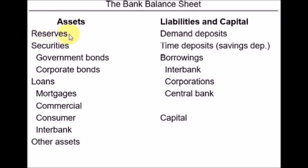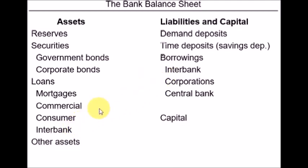On the left-hand side we have assets, showing how the funds have been used. Part of the funds can be used as reserves — the cash the bank holds. Part can be used to buy different kinds of marketable securities, such as government bonds, treasury bills, or corporate bonds. Another part might be used to make loans to different customers: mortgage loans, business loans, consumer loans such as car loans, and interbank loans. Some funds might also be used to buy other assets such as equipment and buildings.